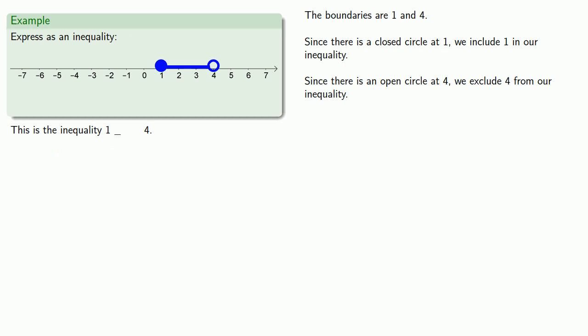Finally we note that we have shaded everything between 1 and 4. Our x has to be between 1 and 4, and it's to the right of 1, so it's got to be greater than or equal to 1, and to the left of 4, so it has to be strictly less than 4.